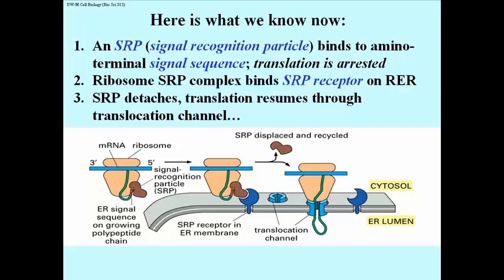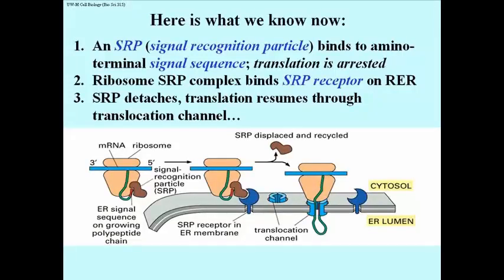Once that binding has occurred, the SRP itself is no longer necessary and it can be removed, and the ribosome associates with another protein in the RER called a translocation channel, which you see two of here. One of them has nothing associated with it, but the light blue structure on the right is actually associated with the large subunit of a ribosome translating a messenger RNA, and the polypeptide coming out is the green thread with the red signal peptide at the end.